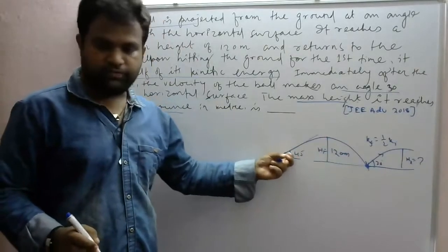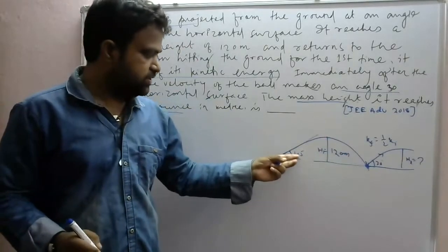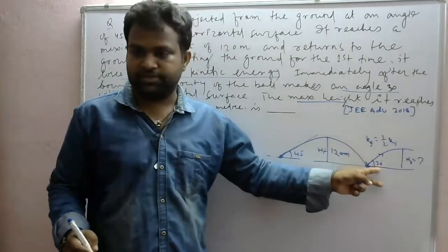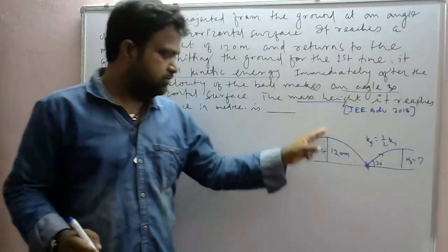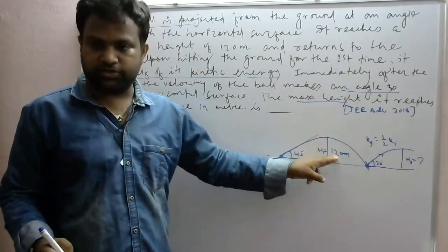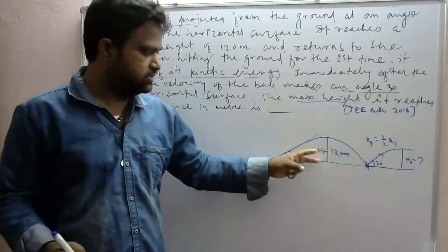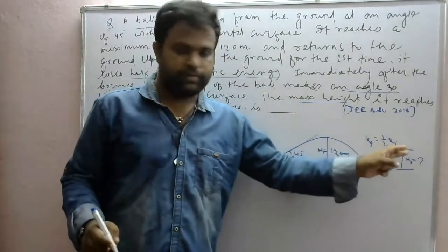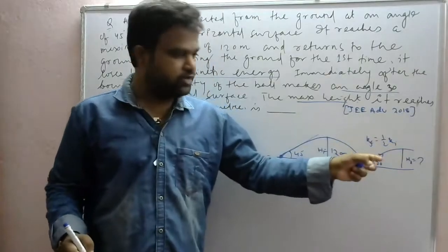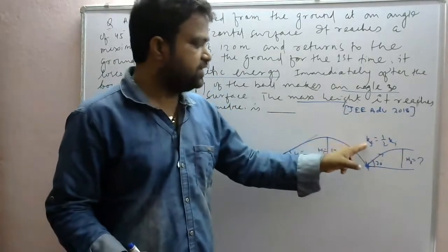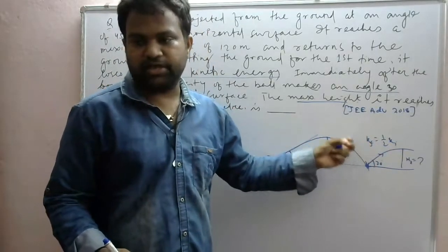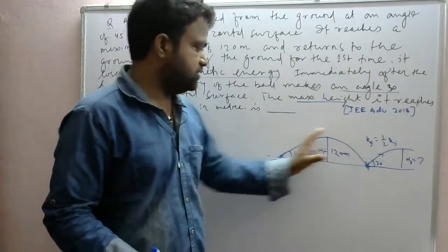To summarize the given data: initial angle of projection is 45 degrees, angle after bounce is 30 degrees, maximum height in the first case h1 is 120 meters, and the final kinetic energy is half of the initial kinetic energy.